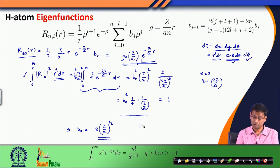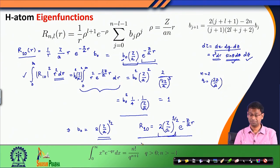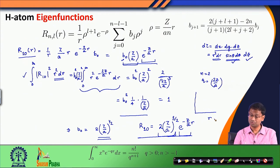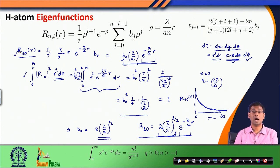The normalized radial function R₁₀ is therefore 2(z/a)^(3/2)·e^(−(z/a)r). This is a constant multiplied by an exponentially decaying function. If we plot this versus r from 0 to ∞, it is simply an exponentially decaying function that approaches 0 for large r and is well-behaved throughout.